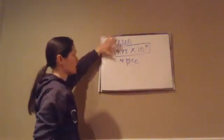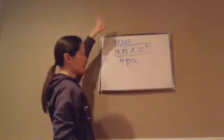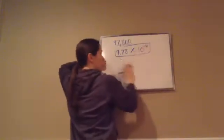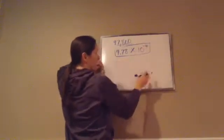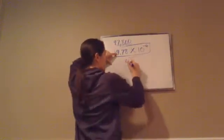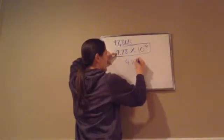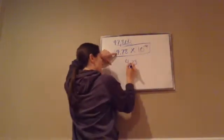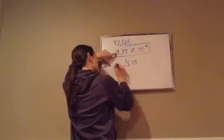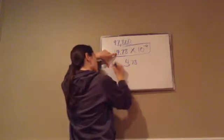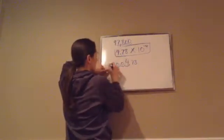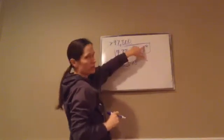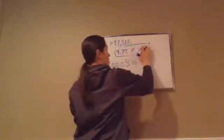Always take each step to make sure. For example, if you thought you needed a negative 4 there, when you tested 4.78 times 10 to the negative 4 — going left 1, 2, 3, 4 — you'd see that 0.000478 does not match 47,800. Therefore the negative would be wrong. Make sure you're always checking that.